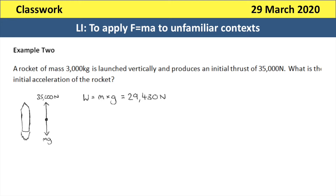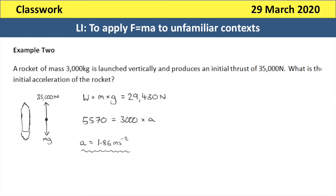The resultant force is going to be that thrust acting upwards taken away from the weight of 29,430 newtons, so the resultant force will be 5,570 newtons. We can then use F equals M times A to work out the acceleration, knowing that the resultant force is the thrust minus the weight. Substituting those numbers in, the acceleration will be 5,570 divided by 3,000, which gives an answer of 1.86 metres per second squared.